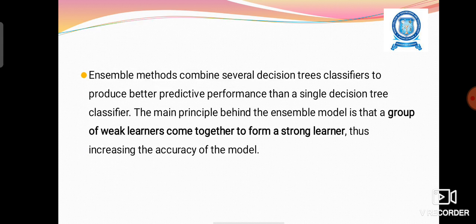Ensemble methods combine several decision tree classifiers to produce better predictive performance than a single decision tree classifier. The main principle behind the ensemble model is that a group of weak learners come together to form a strong learner, thus increasing the accuracy of the model.